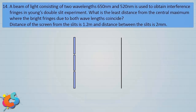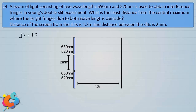Now let's work out the next question. A beam of light consisting of two wavelengths — 650 nanometer and 520 nanometer — is used to obtain interference fringes in Young's double slit experiment. What is the least distance from the center maximum where the bright fringes due to both wavelengths coincide? The screen is 1.2 meter from the slits and the slit separation is 2 millimeter.